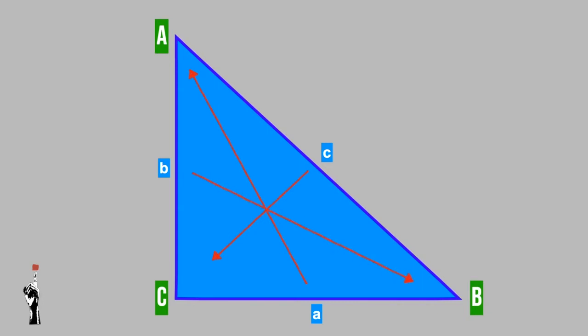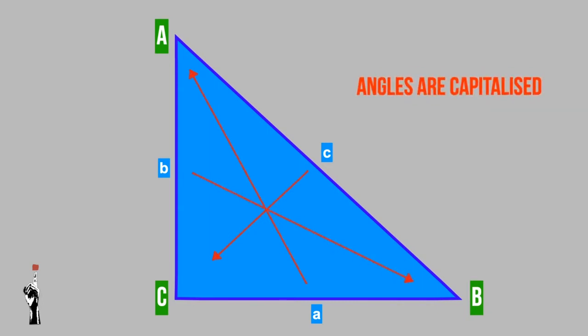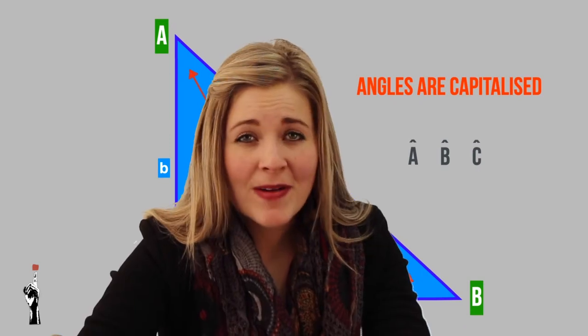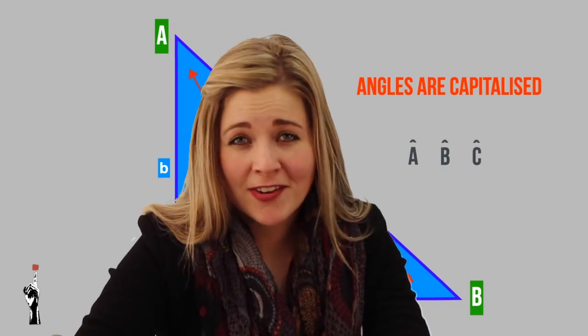Angles are written with capital letters and have special symbols on top of them: angle A, angle B, and angle C. Now we are back to the Pythagorean theorem.